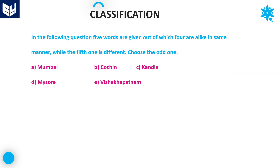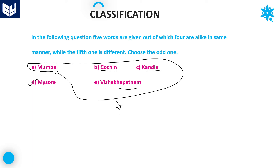Let's see the next question. The options are: Mumbai, Cochin, Kandla, Mysore, and Vishakhapatnam. If you observe carefully — if you have knowledge of harbors — Mumbai has a harbor, Cochin has a harbor, Kandla is a harbor, and Vishakhapatnam is a harbor. But Mysore is not a harbor. Except Mysore, all the remaining options are harbors. So Mysore is the right answer for this question. Option D is the right answer.